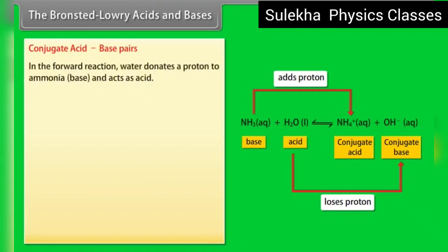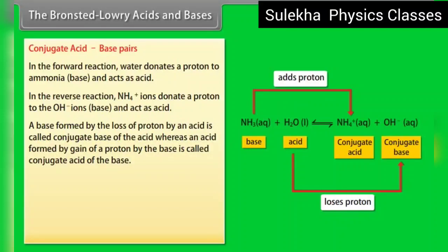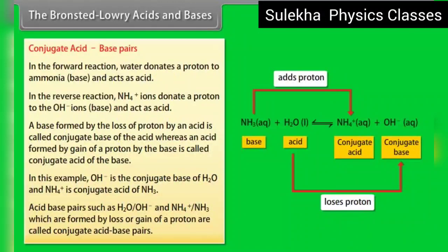Conjugate acid-base pairs: in the forward reaction, water donates a proton to ammonia and acts as an acid. In the reverse reaction, NH4+ ions donate a proton to the OH− ions and act as an acid. A base formed by the loss of a proton by an acid is called the conjugate base of the acid. An acid formed by gain of a proton by the base is called the conjugate acid of the base. In this example, OH− is the conjugate base of H2O, and NH4+ is the conjugate acid of NH3. Acid-base pairs such as H2O/OH− and NH4+/NH3, formed by loss or gain of a proton, are called conjugate acid-base pairs.